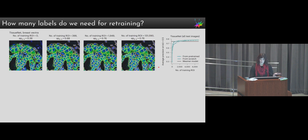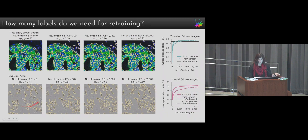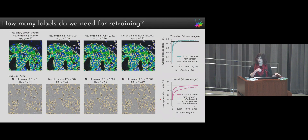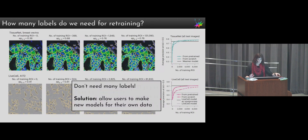This was also true for the LiveCell dataset. Running the out-of-the-box CellPose model misses a lot of cells, but after training with around 2,000 to 3,000 ROIs you're doing a good job segmenting all of them. Looking at performance as a function of training ROIs, it takes a little longer with LiveCell, but around 3,000 to 4,000 ROIs we're doing as well as or better than the model provided with the paper. Starting from scratch was substantially worse — we think that's because cell shapes in LiveCell are more difficult, so it helps a lot more to start from the pre-trained CellPose model.